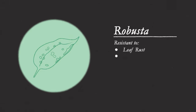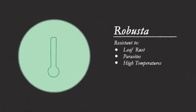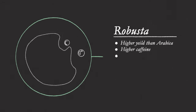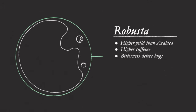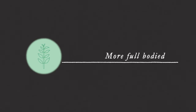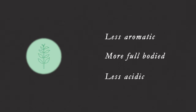Robusta is highly cultivated due to its resistance to diseases like leaf rust, parasites, and high temperatures. In general, it can grow in more challenging weather and soil conditions — it's more robust. Robusta also thrives at low altitudes up to 1,200 meters and it's more productive overall. It's also high in caffeine, which makes it taste quite bitter, and it's one reason bugs don't like eating it — it's nature's own pesticide. Aside from bitterness, it is more full-bodied, less acidic, and less aromatic than Arabica.